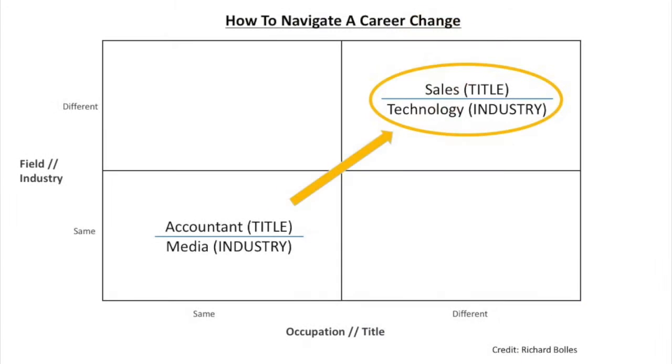The most difficult shift for my wife would be to shift both her job title and her industry at the same time. So in other words, if she applied for a job as a salesperson in the technology industry...